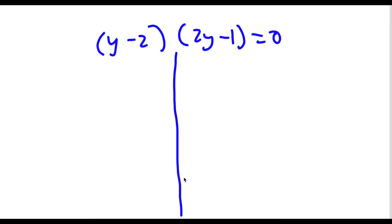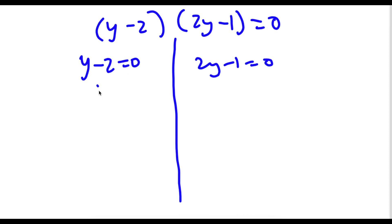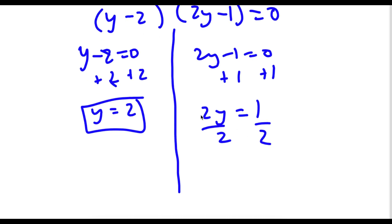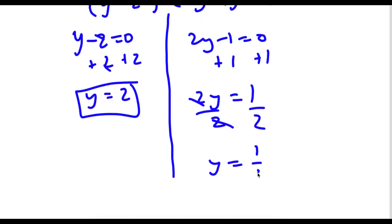This gives me two equations: y minus 2 equals 0, and 2y minus 1 equals 0. For y minus 2 equals 0, I add 2 on both sides and get y equals 2. For 2y minus 1 equals 0, I add 1 on both sides to get 2y equals 1, then divide by 2 to get y equals 1 half.